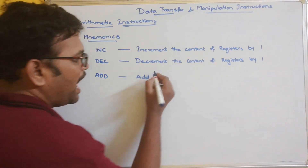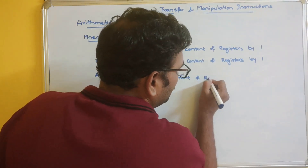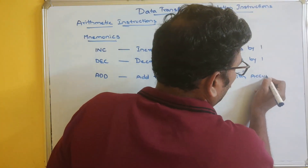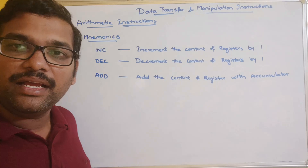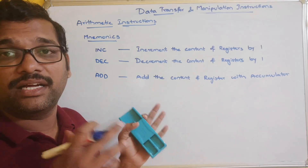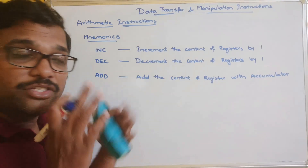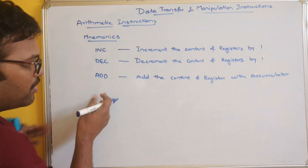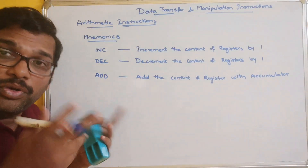The ADD mnemonic is used to add the content of a register with the accumulator. The accumulator is also a processor register - we have already seen the design of the accumulator. By default, the register will be the accumulator itself. This accumulator register is used to store intermediate results. So whatever register we are giving, the content of that particular register will be added with the accumulator.